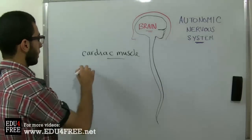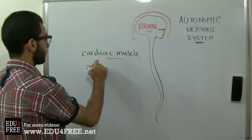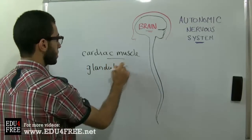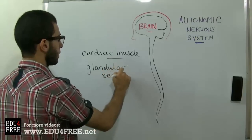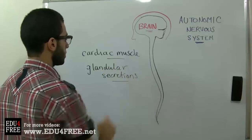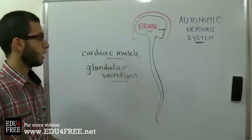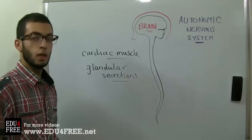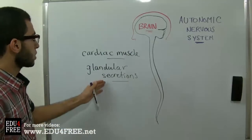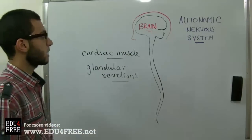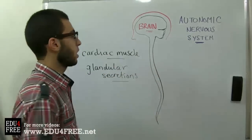Another example is the glandular secretions, like the salivary glands and the adrenal medulla — the gland over the kidney — which secrete secretions. All of these actions are controlled by the Autonomic Nervous System.